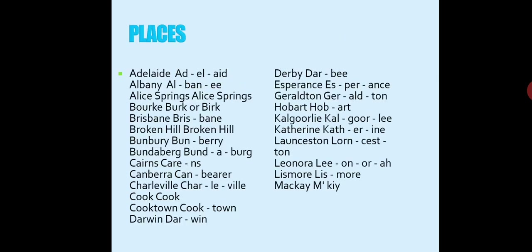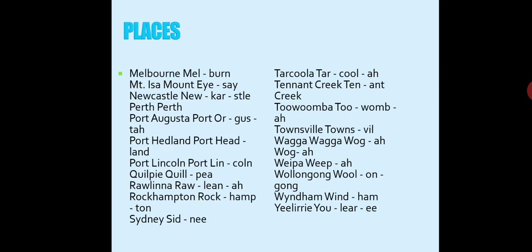You need to familiarize yourself with places in Australia, because when maps appear in part two, Australian place names will be the examples. Brisbane is pronounced 'Brisbn,' Melbourne stays 'Melbourne,' and there's Mount Isa and Newcastle. You can take a screenshot, pause, and practice — but remember, you're not supposed to practice pronouncing them. You just need to make yourself familiar with them.